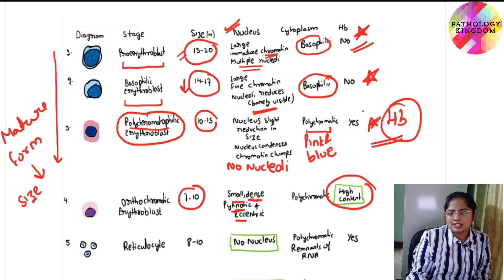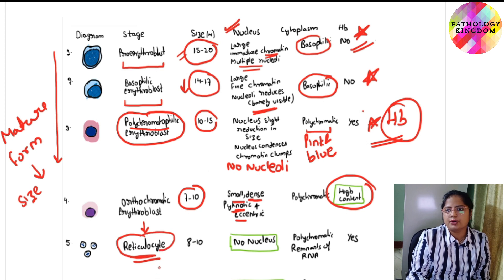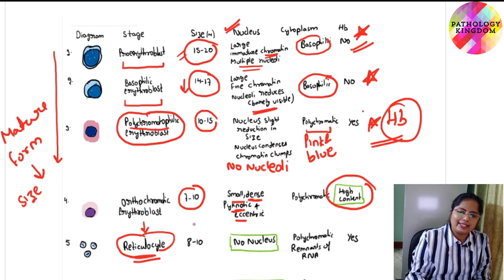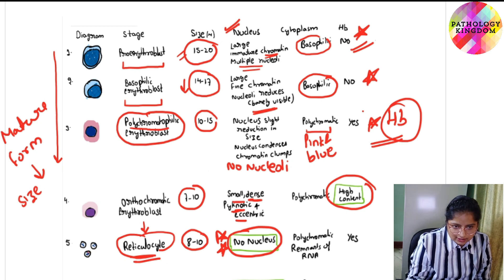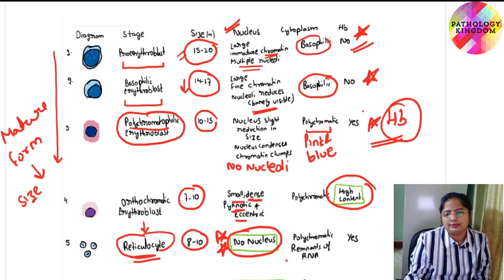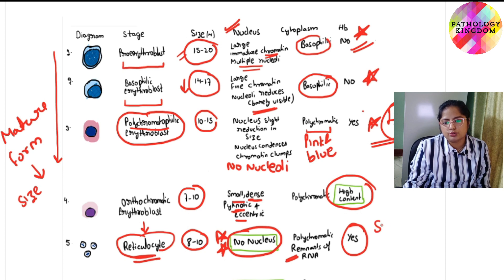The next stage is reticulocyte. Reticulocytes can be visualized with the help of supravital staining — for example, methylene blue, which is commonly used. The size is 8 to 10 microns. They have no nucleus. The cytoplasm is polychromatic, and you can see dot-like structures which are the remnants of RNA. Reticulocytes also contain hemoglobin.